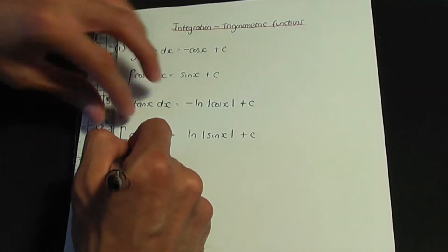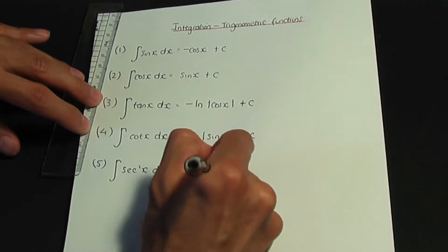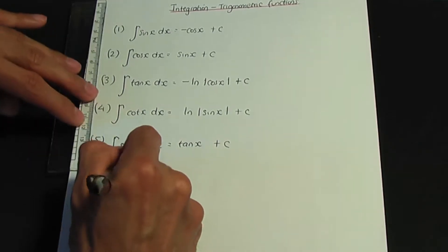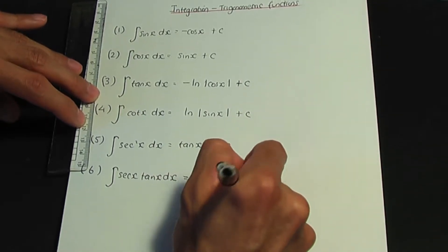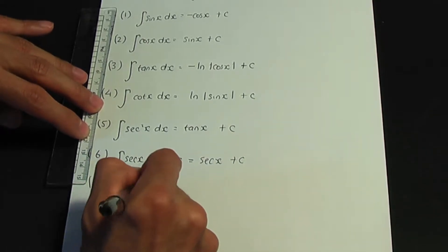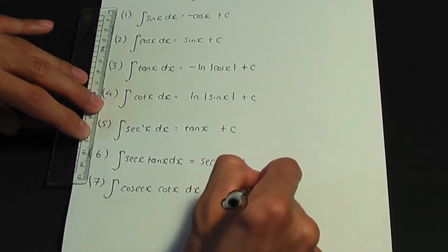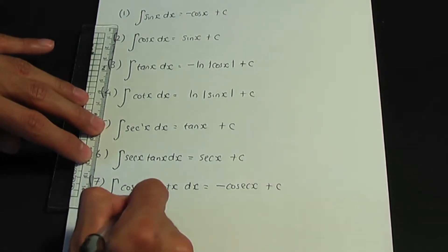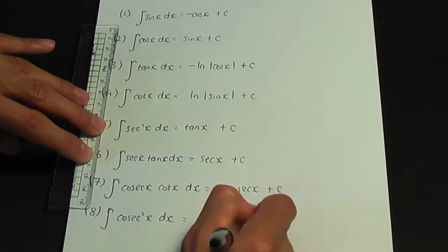Result number five: when you integrate sec squared x with respect to x, you get tan x plus c. Result number six: when you integrate sec x tan x with respect to x, you get sec x plus c. Result number seven: when you integrate cosec x cot x with respect to x, the result is minus cosec x plus c. And finally, result number eight: when you integrate cosec squared x with respect to x, you get minus cot x plus c.